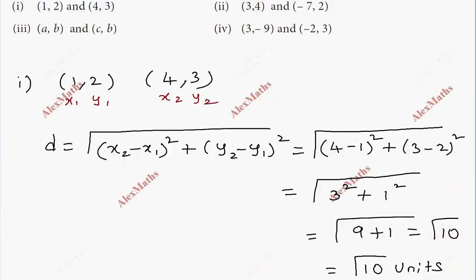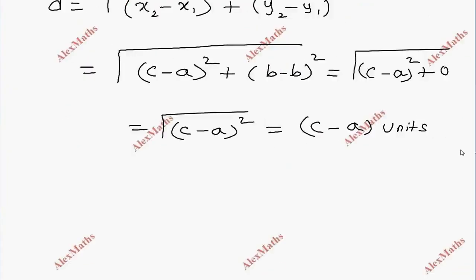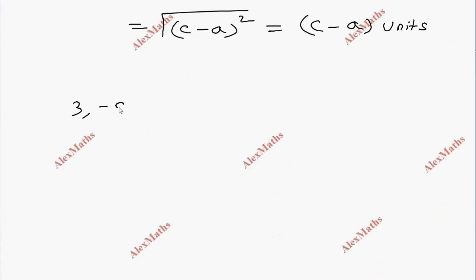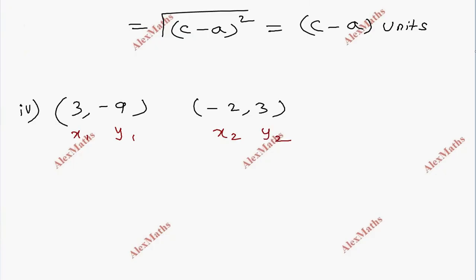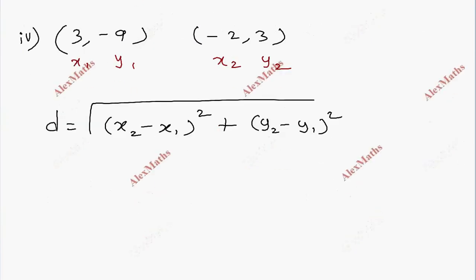For subdivision 4, the points are (3, -9) and (-2, 3). Once again, labeling them as x1, y1 and x2, y2, we apply the distance formula: distance equals the square root of (x2 minus x1) whole square plus (y2 minus y1) whole square. This is a direct substitution.